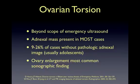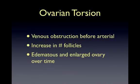Ovarian torsion is again beyond the scope of emergency physician-performed ultrasound. An adnexal cyst or mass is present in most cases of ovarian torsion; however, up to a quarter of cases occur in normal ovaries, with adolescents making up the largest number of those cases. The most common sonographic finding for ovarian torsion is ovarian enlargement, because venous obstruction occurs before arterial obstruction, leading to an increased number of follicles and a more edematous and enlarged ovary over time.